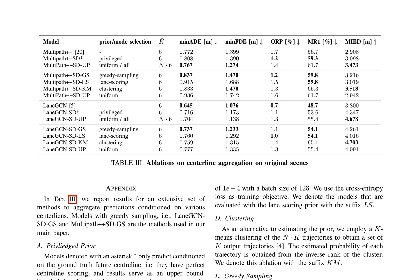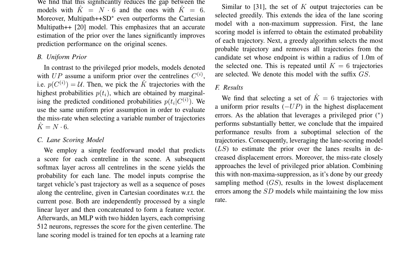The summary explains the use of Multipath++ and Lane GCN models for trajectory prediction, and how they are evaluated with different centerline aggregation methods. It emphasizes the significance of accurate estimation of the prior over the lanes, citing the privileged prior model as an upper bound.